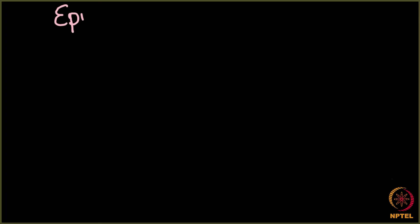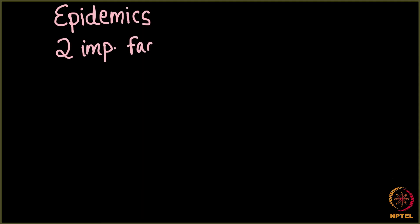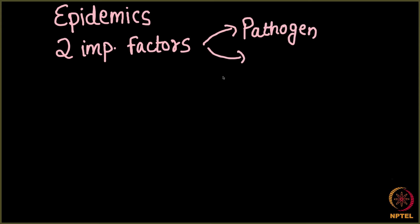Before going further, let us quickly recap what we have done in this chapter. First, we looked at what epidemics are and how network scientists can study them. Then we looked at two important factors required for modeling a contagious disease: the first was a pathogen which was spreading, and the second was a network on which the contagion spreads.